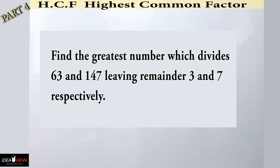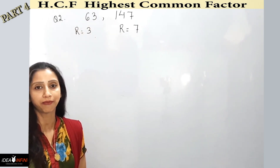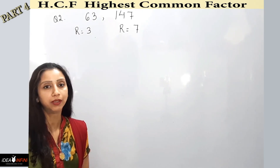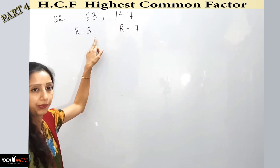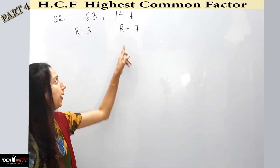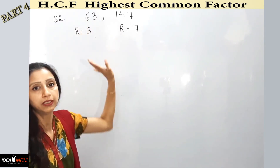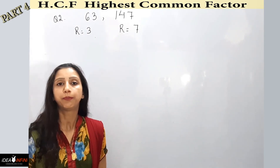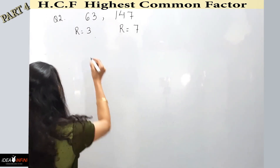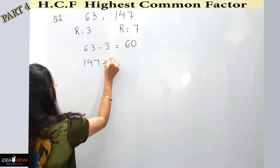Let's do another example: find the greatest number which divides 63 and 147, leaving remainders 3 and 7 respectively. I have to find the biggest number which, when it divides 63, leaves remainder 3, and when it divides 147, leaves remainder 7. As before, subtracting the remainder from the dividend makes it perfectly divisible.